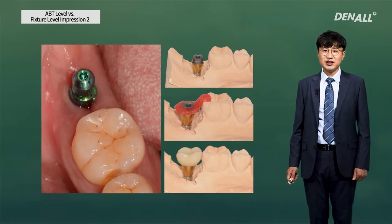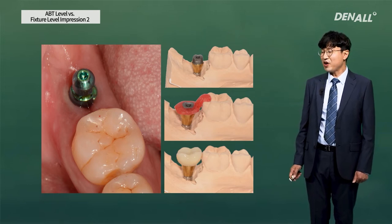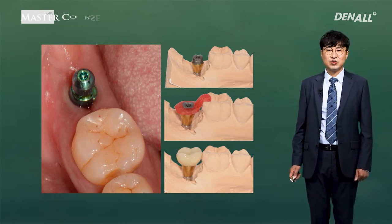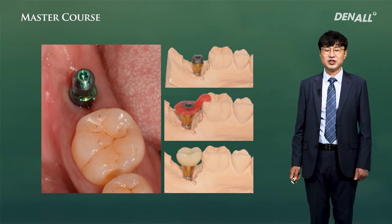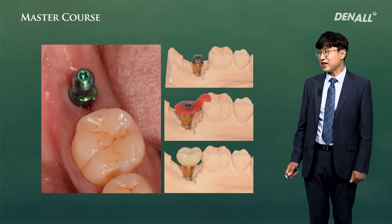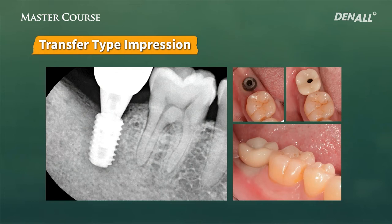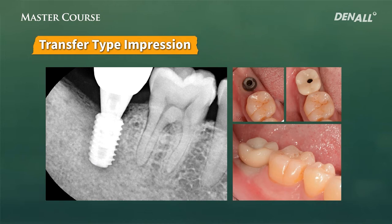Let's look at the real case. The dentist simply connects the transfer impression coping and takes the impression with a closed tray. The next steps can all be done at the lab. Consult the lab to select the abutment, modify it, and fabricate the final prosthesis. Then the dentist tests the abutment, others are delivered, the final prosthesis is delivered to the mouth, and everything is complete.